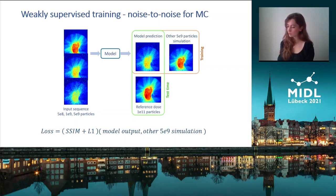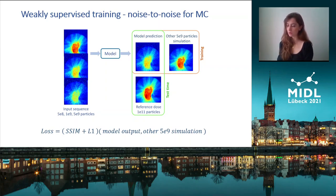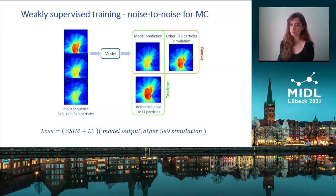The model weights are optimized using only the noisy simulations computed for the patients in the training set, and the reference dose is kept for test time. We optimized our model using a weighted loss between the structural similarity index measure (SSIM) and the L1 loss. During training, the loss is computed between the model's output and another noisy simulation of the input patient.